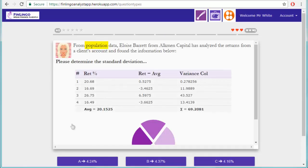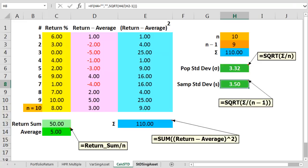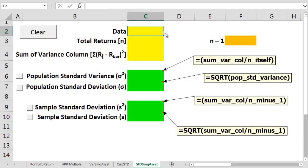So on Finlingo, this is a population question. n is equal to 4, and the variance sum is 69.2081. Let's move those numbers over to another incredible Excel spreadsheet to get our population standard deviation.